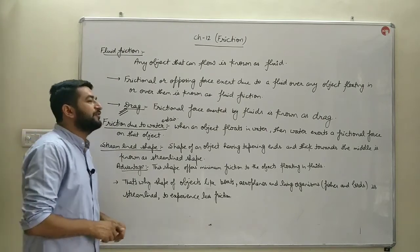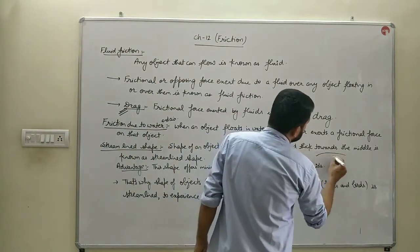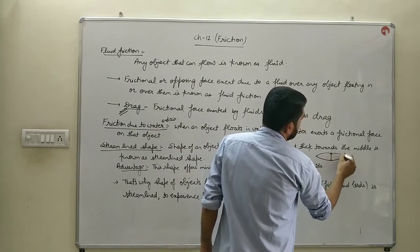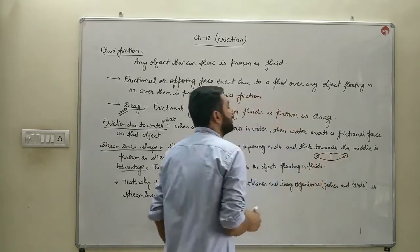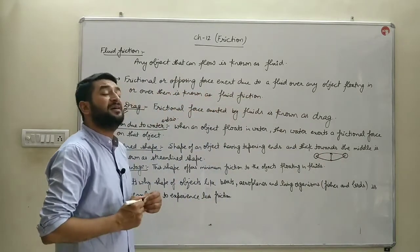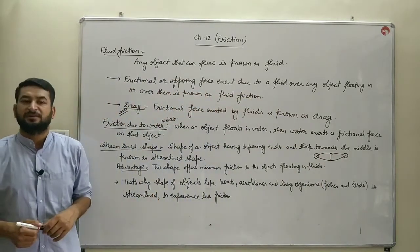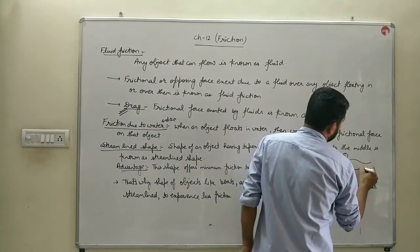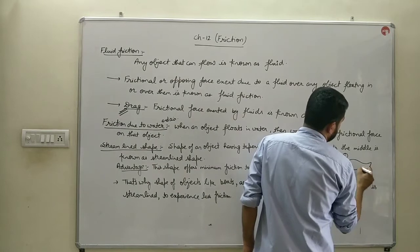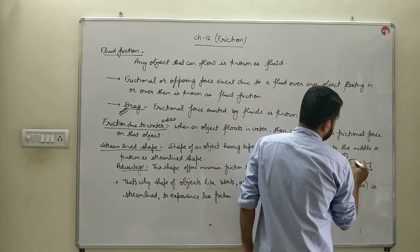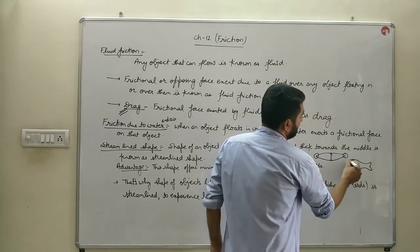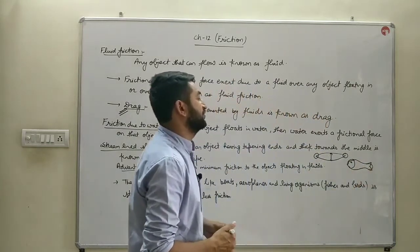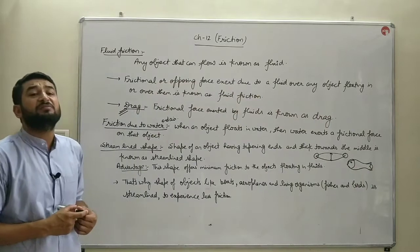What is a streamlined shape? It is the shape of an object having tapering ends and being thicker from the middle. These are the tapered ends and the thickness is towards the middle. Generally, ships, fishes, and boat bases are of this kind of shape — tapering ends and thicker from the middle. This is the streamlined shape.